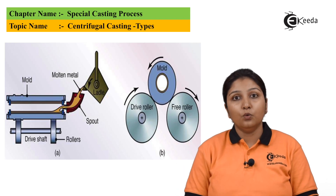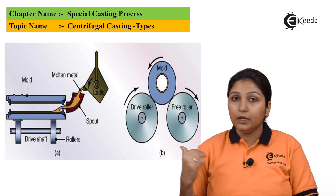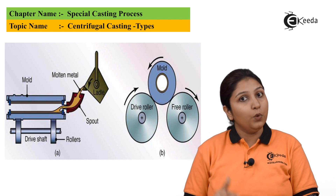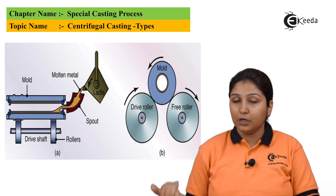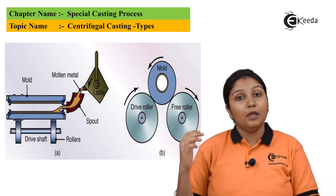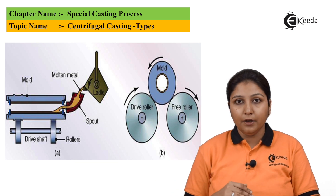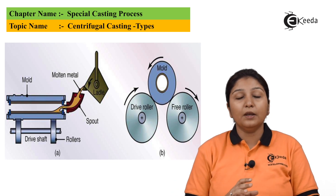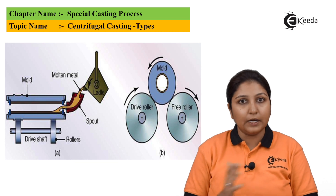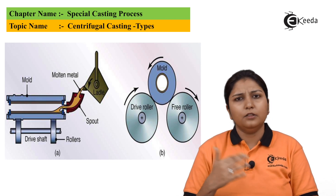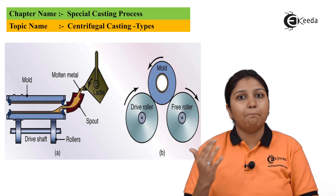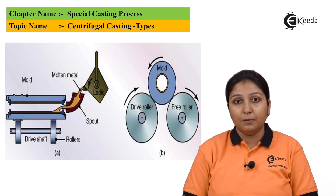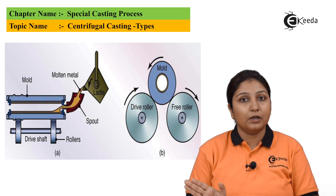The first type is true centrifugal casting. In the diagram, you can see that there is a casting which is revolving. There is a pouring basin in which the material is being fed. In true centrifugal casting, you can make symmetrical objects that are symmetrical to the axis — the object may be pipes, etc. Pipes can be easily made through the centrifugal casting process.